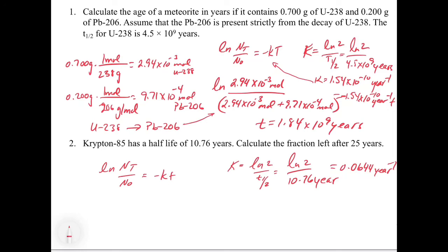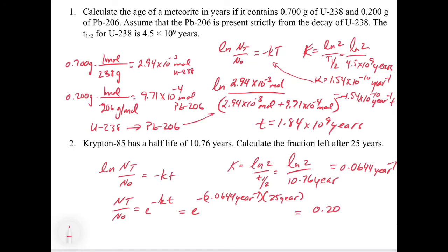To get the fraction, we rearrange to N_t / N_0 = e^(−kt). Plugging in: e^(−0.0644 years⁻¹ × 25 years) = 0.2. So the fraction of krypton-85 atoms remaining divided by the original number of atoms is 0.2, meaning 20% is left after 25 years.